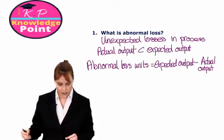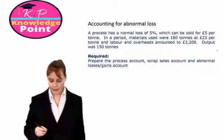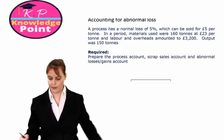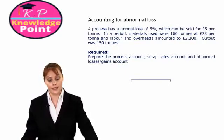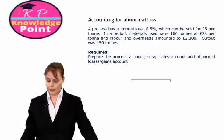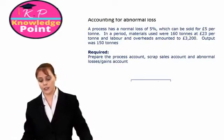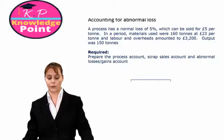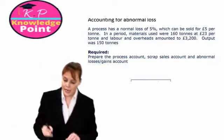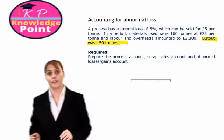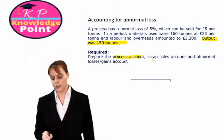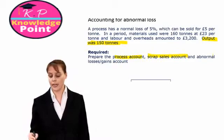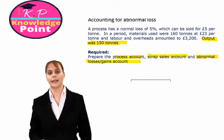We'll have a look at an exercise. A process has a normal loss of 5% which can be sold for £5 per tonne. In a period, our input materials were 160 tonnes at £23 per tonne, and our conversion costs — so our labour and our overheads — were £3,200. Our output was 150 tonnes. We need to prepare the process account, the scrap sales account, and now we will also have an abnormal losses and gains account.